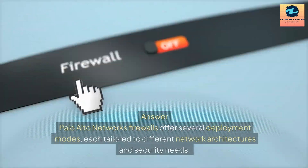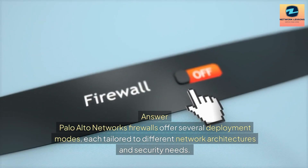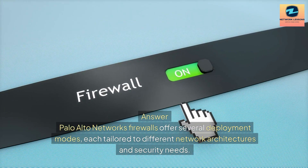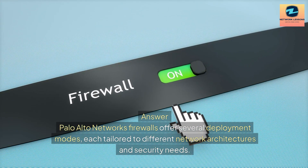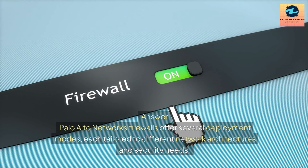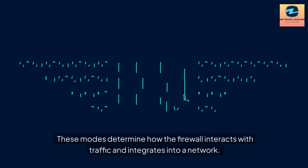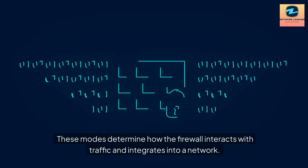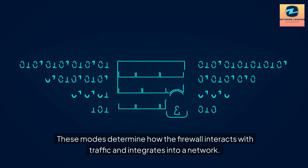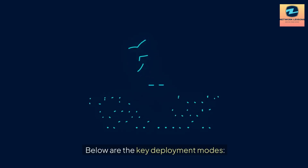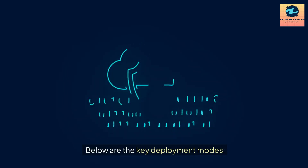Palo Alto Networks firewalls offer several deployment modes, each tailored to different network architectures and security needs. These modes determine how the firewall interacts with traffic and integrates into a network. Below are the key deployment modes.